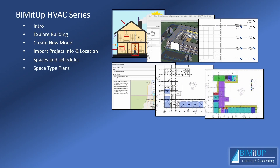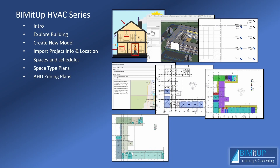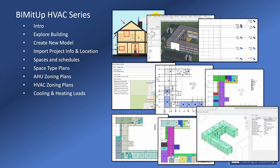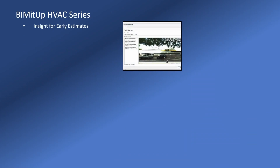Then we're going to create space type plans. We're going to create air handling unit zone plans and HVAC zoning plans for VAV boxes. We're going to perform cooling and heating loads for our building using Revit. Then I'm going to take you to Insight for early estimates for when you don't have all the architectural information yet.